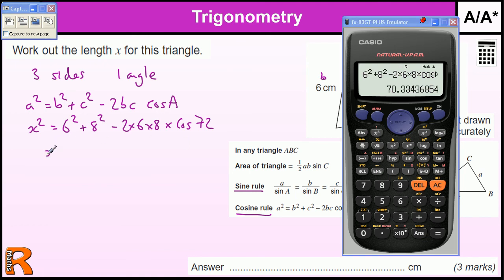So, x squared is 70.33436854 and some more. That's what the calculator is, as far as the calculator goes. And then we just need to do the square root of the answer. And that gives us x, which is 8.3865588 and some more.